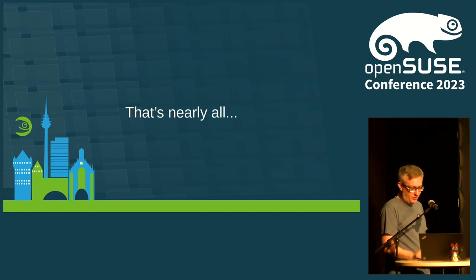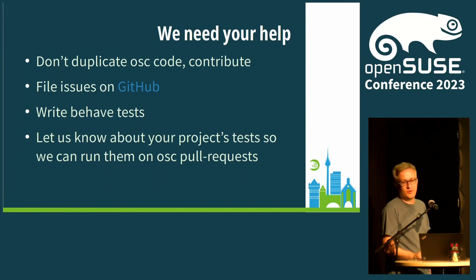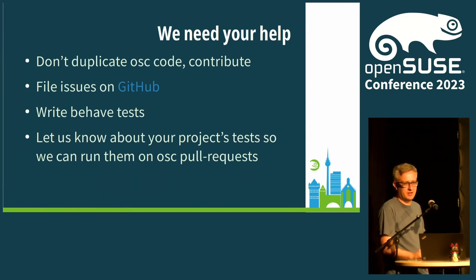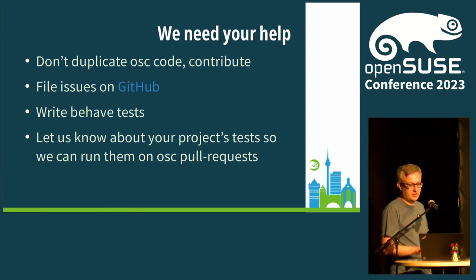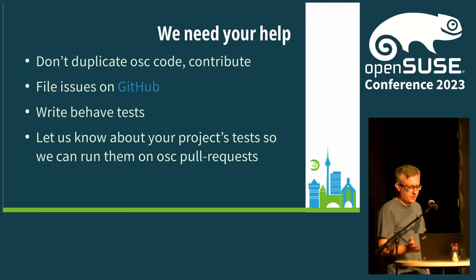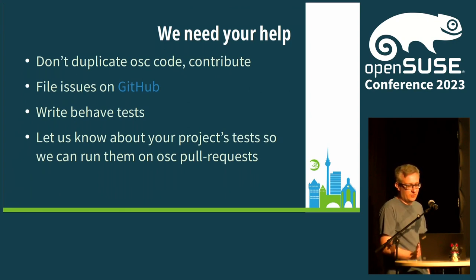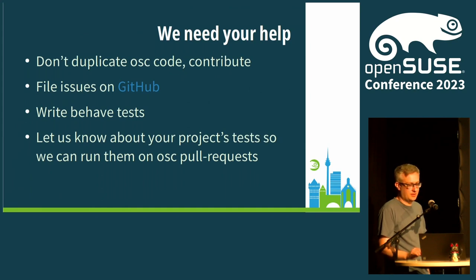That was quite quick — that's nearly all. Before we finish and do questions and answers, I need to call for help. It seems that quite a lot of people duplicate OSC code, which is something I don't like — we should contribute in one place. If you know about any code that should belong to OSC, please file an issue and we can make it part of OSC and available for everyone. If you have code that works around OSC issues, the same applies — file an issue and we will fix it directly in the code. If you want to contribute by covering test cases, please write behave tests and contribute those back to OSC.